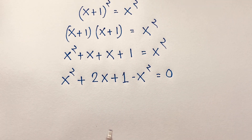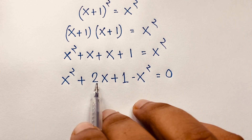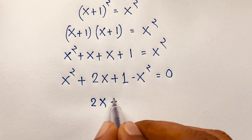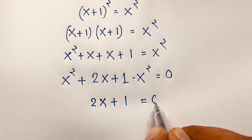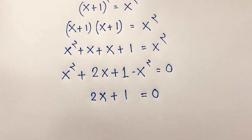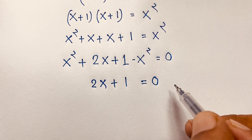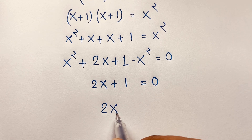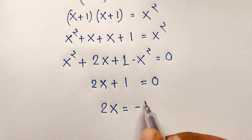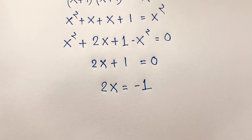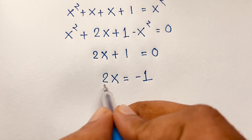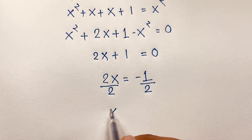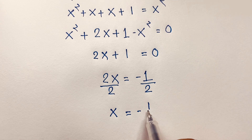How interesting — because of that, x squared and x squared cancel out. We find that it will be 2x plus 1 is equal to 0. Now I move this 1 to this side, it will be negative, so 2x is equal to minus 1. Then if I divide both sides by 2, we find x is equal to negative one-half.